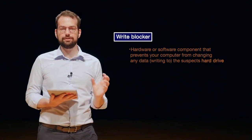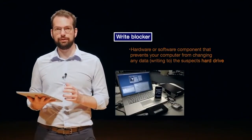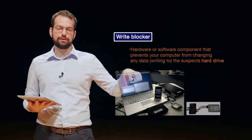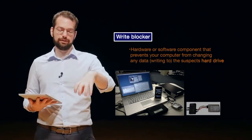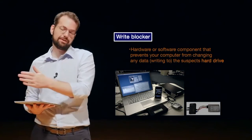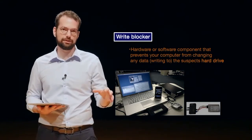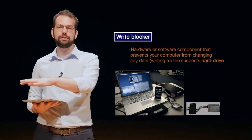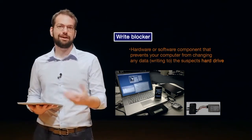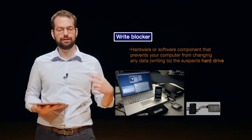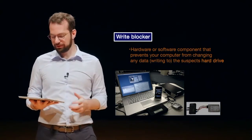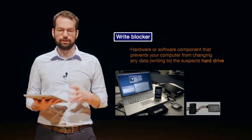A write blocker can be either a physical device or a piece of software that you install on your computer. The idea is exactly like it sounds. Whenever you connect a suspect's hard drive through a write blocker to your forensic workstation, your workstation is physically prevented from writing any data to the suspect hard drive. You can still read all of the data off the drive, but you cannot write to it. In this way, we can make sure our computer doesn't accidentally write any information to the suspect disk, so we get an unmodified copy every time.